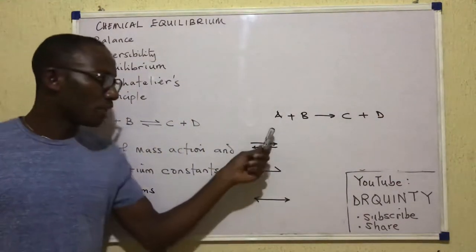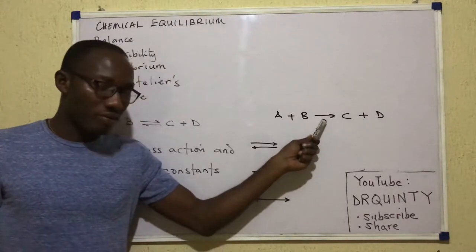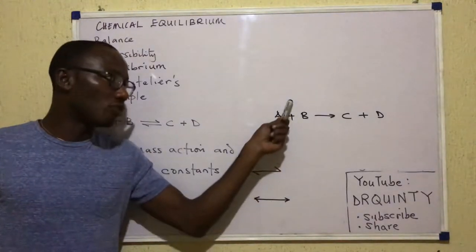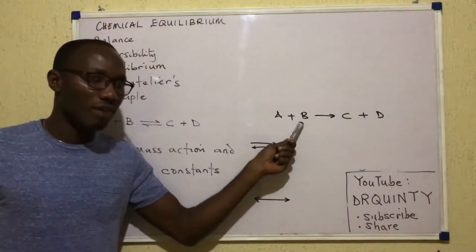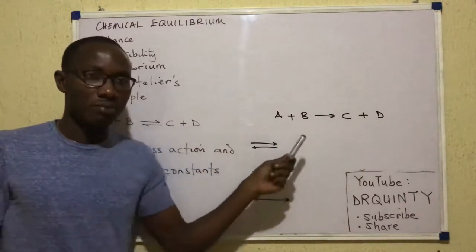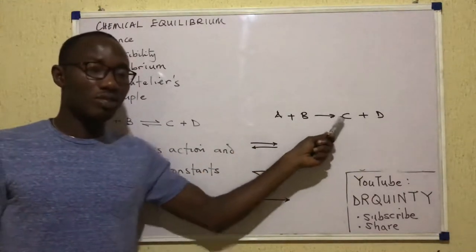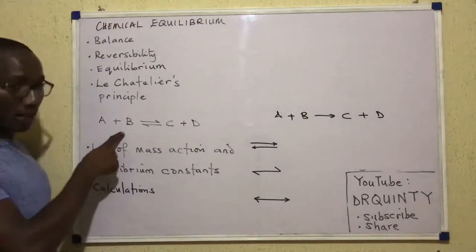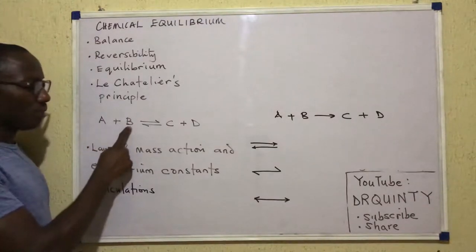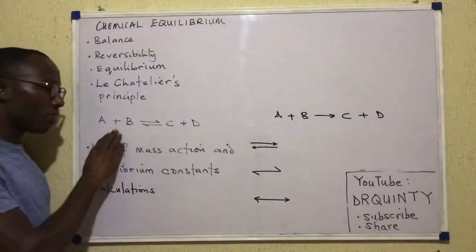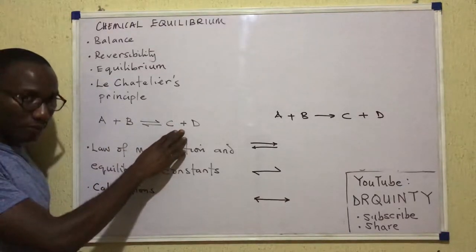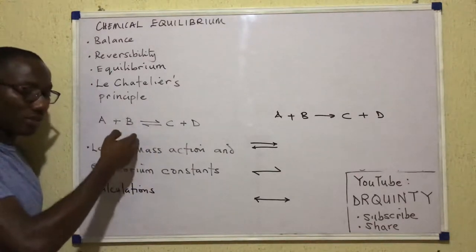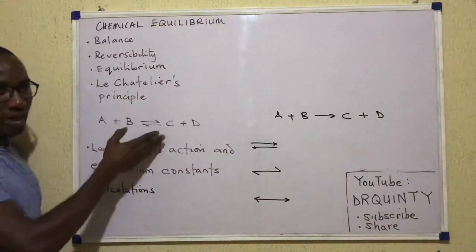If I put A and B into a reaction vessel for an irreversible reaction like this one, by the end of the reaction, I'll have no more A, no more B. All I'll have left will be C and D. So in that case, A and B are called reactants, whereas C and D are called products. However, in this case, I put A and B into a reaction vessel. As they react to form C and D, the C and D produced will also keep reacting to form back A and B. So it's a two-way reaction, actually.